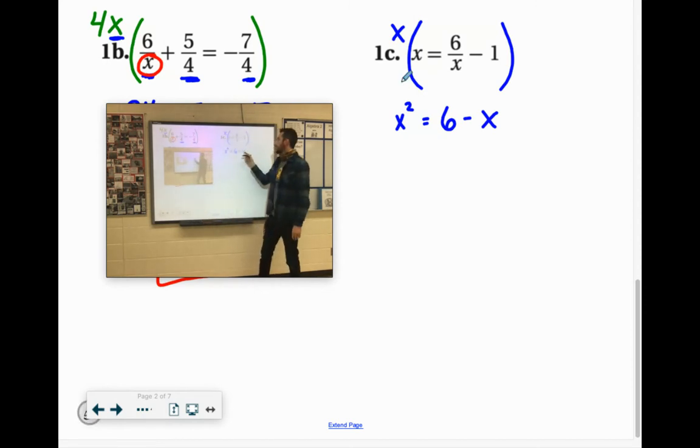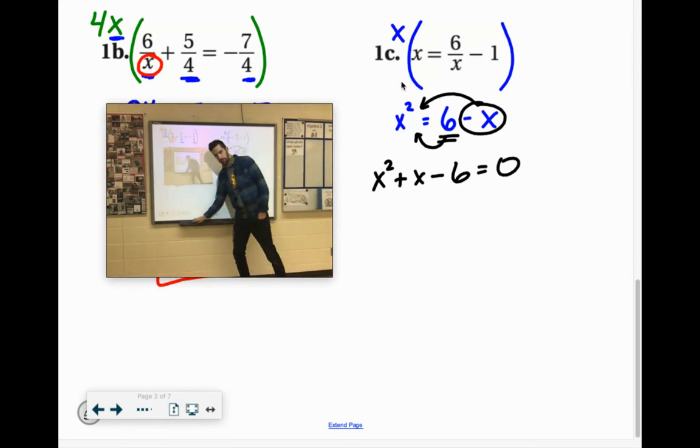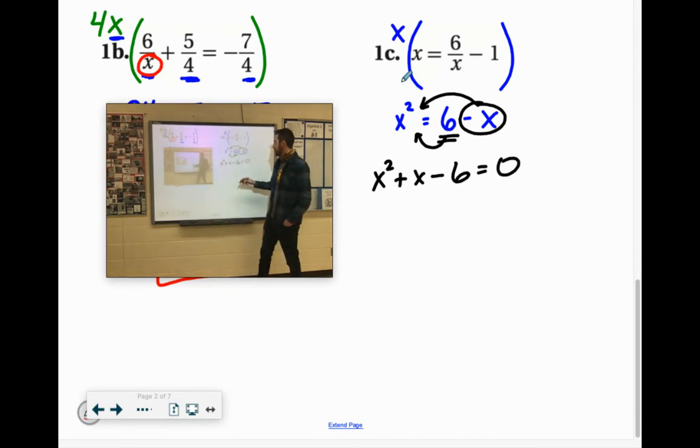So we get them to the same side. This negative x over there would become positive x. Moving that 6 over there, you'd have to subtract 6. So we'd have x squared plus x minus 6 equals 0.